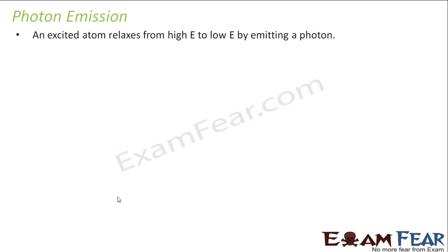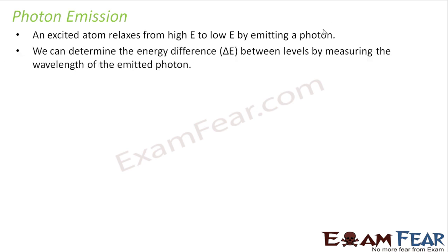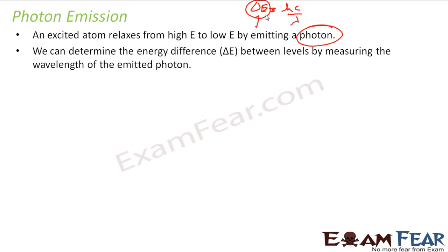Now let us see what is photoemission. An excited atom moves from high energy to low energy and this emits a photon, and a lot of photons make a spectrum. We can determine the difference in energy between the levels by measuring the wavelength of the photons emitted, because delta E is nothing but hc by lambda. If we know the wavelength, we can find the difference in energies of two different levels using the formula hc by lambda.